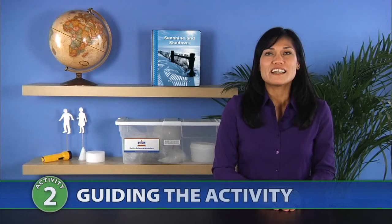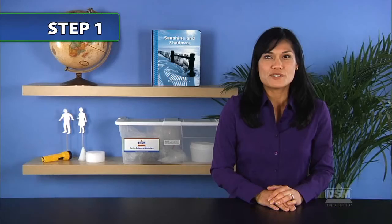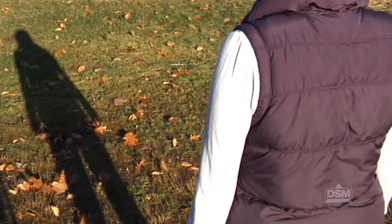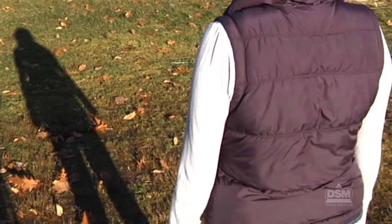To begin the activity, help the students understand that the sun is not the only light source that can make a shadow. Review Activity 1 by asking the students about the three things needed to make a shadow.